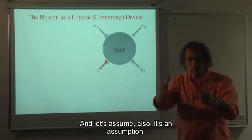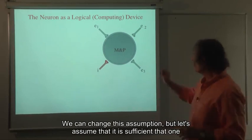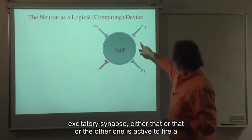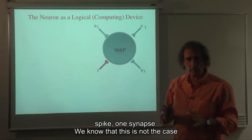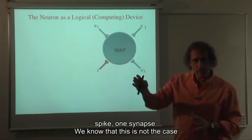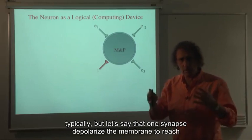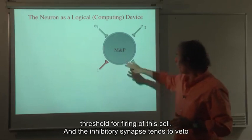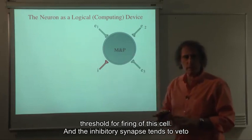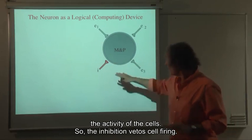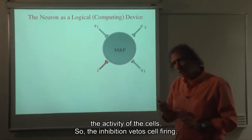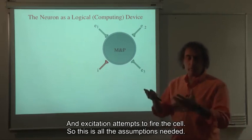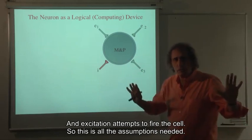And let's assume also, it's an assumption, we can change this assumption, but let's assume that it is sufficient that one excitatory synapse, either that or that or the other one, is active to fire a spike, one synapse. We know that this is not the case typically, but let's say that one synapse depolarizes the membrane to reach threshold for firing of this cell. And the inhibitory synapse tends to veto the activity of the cell.